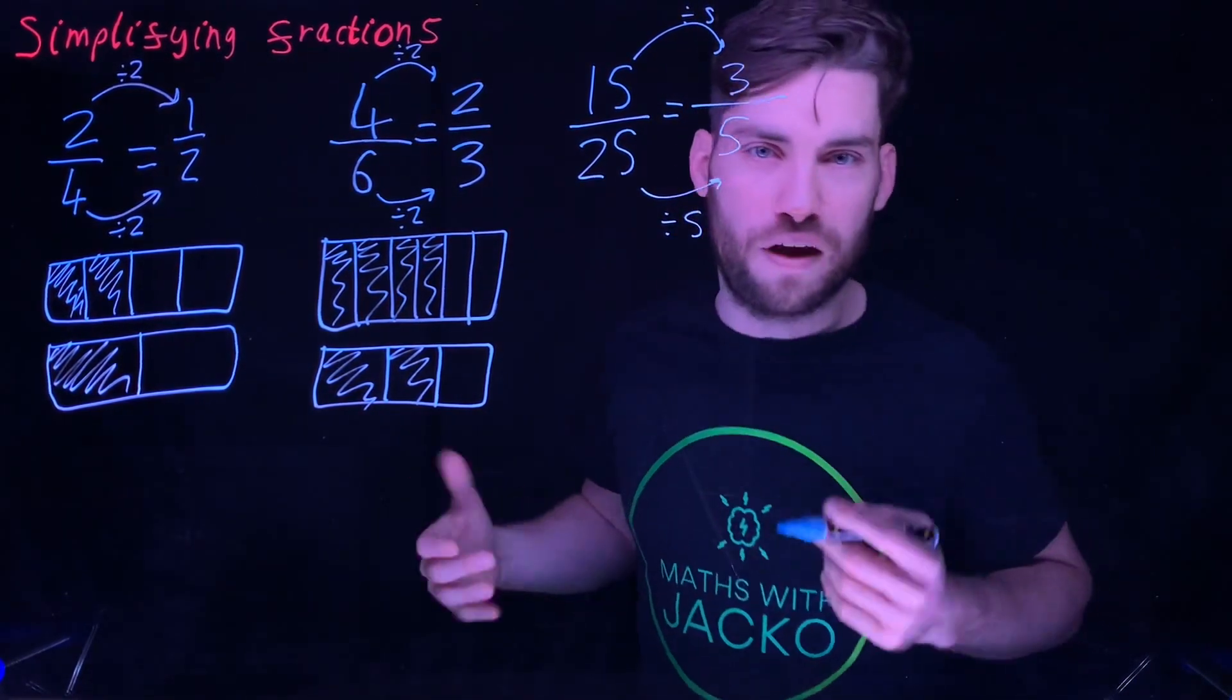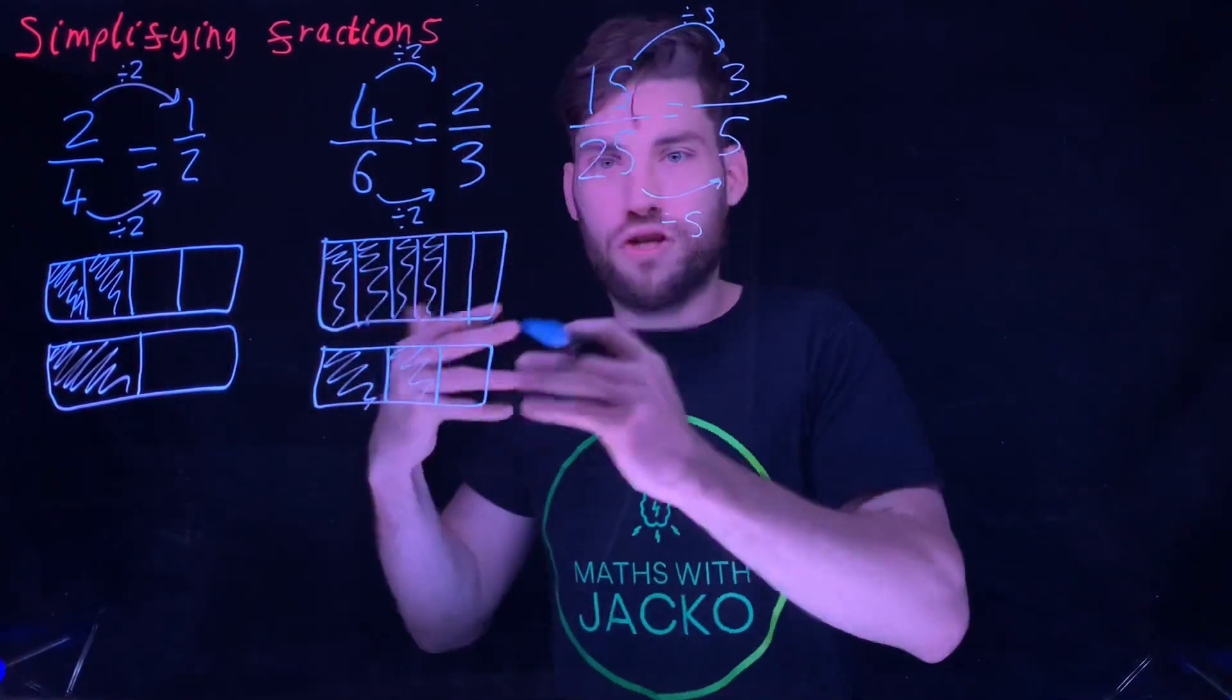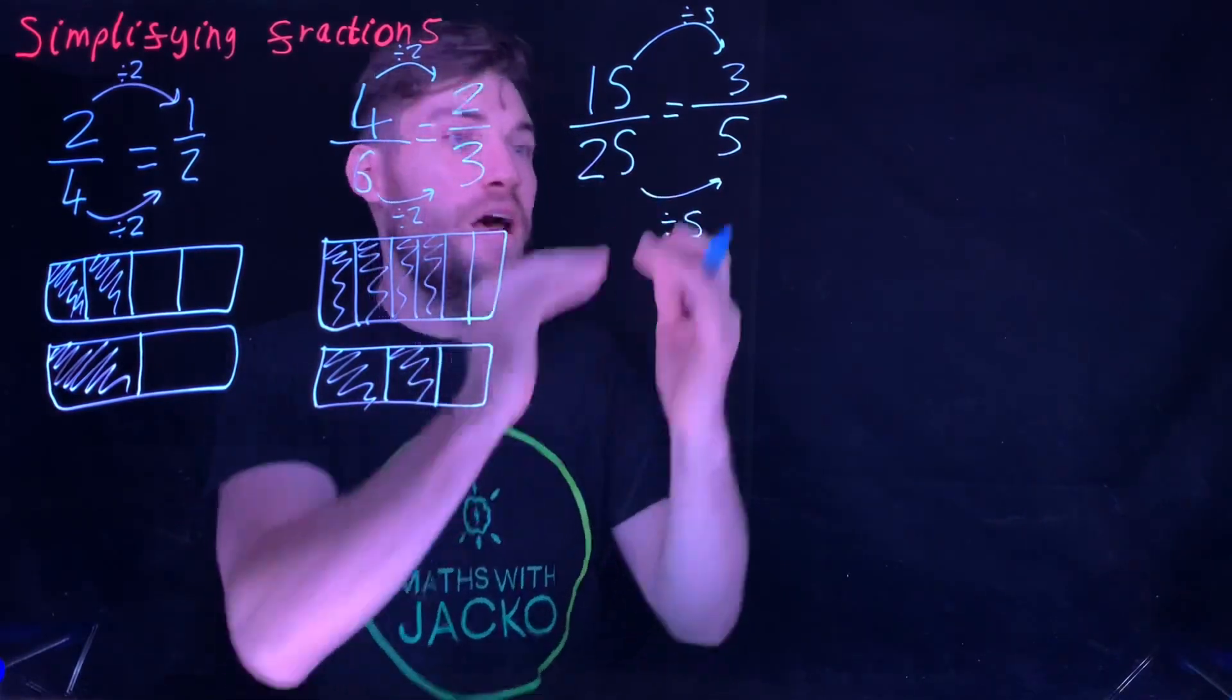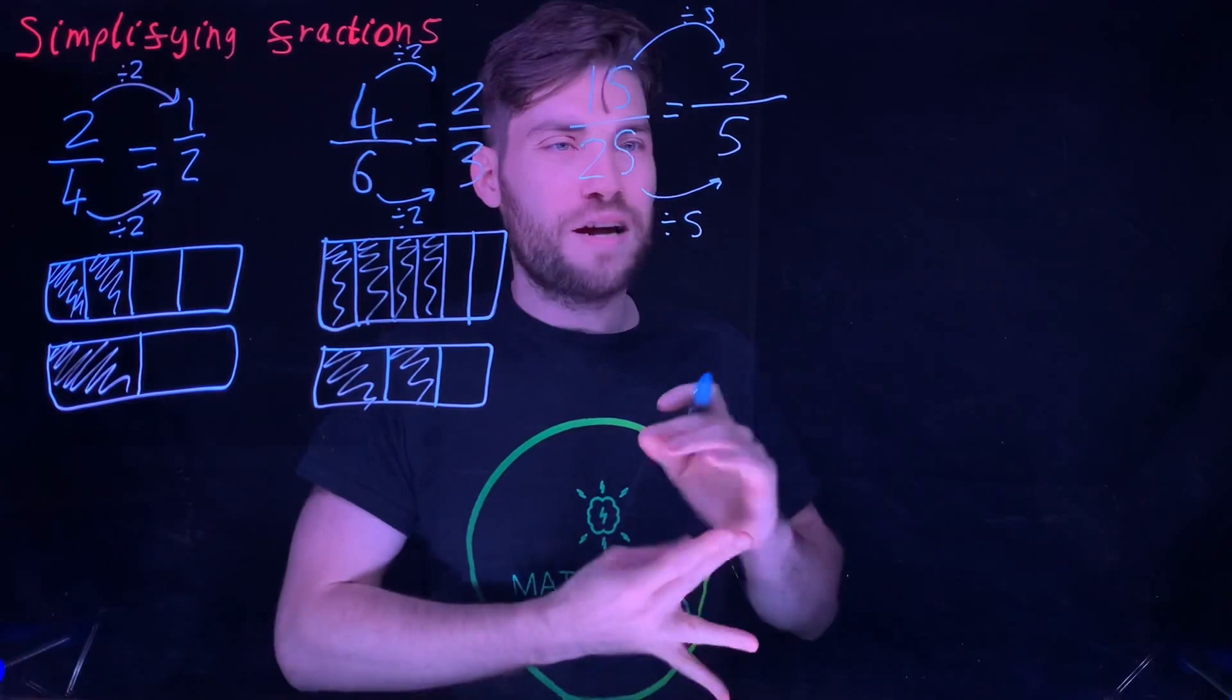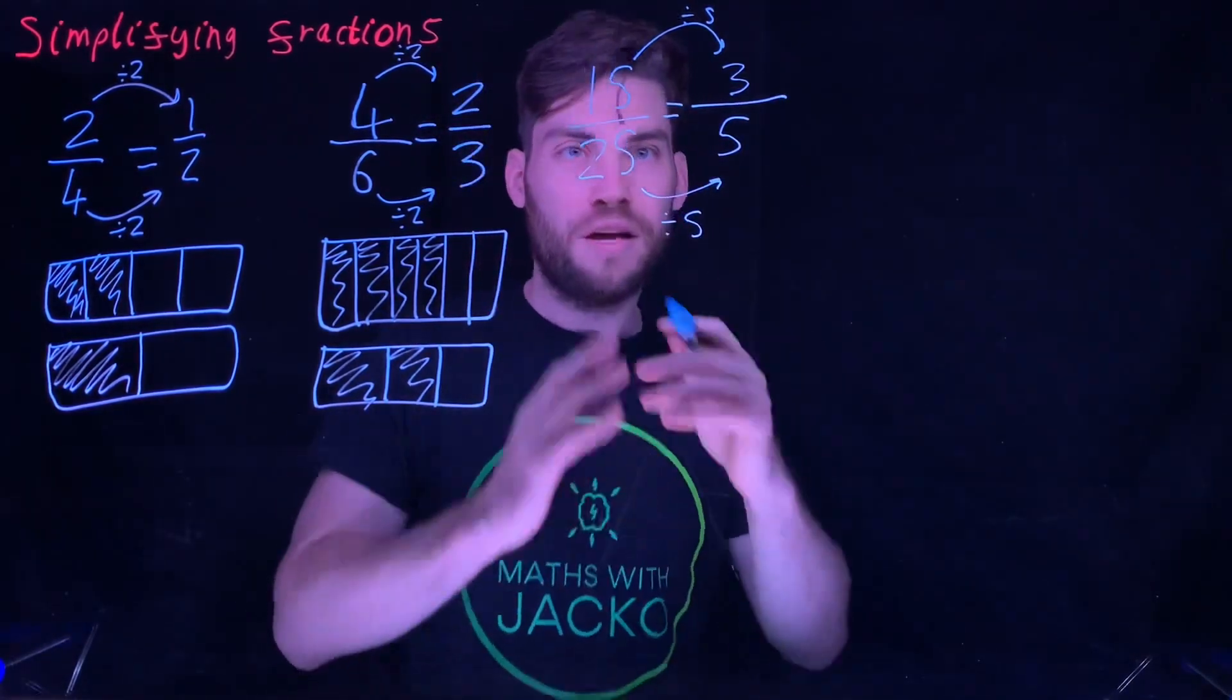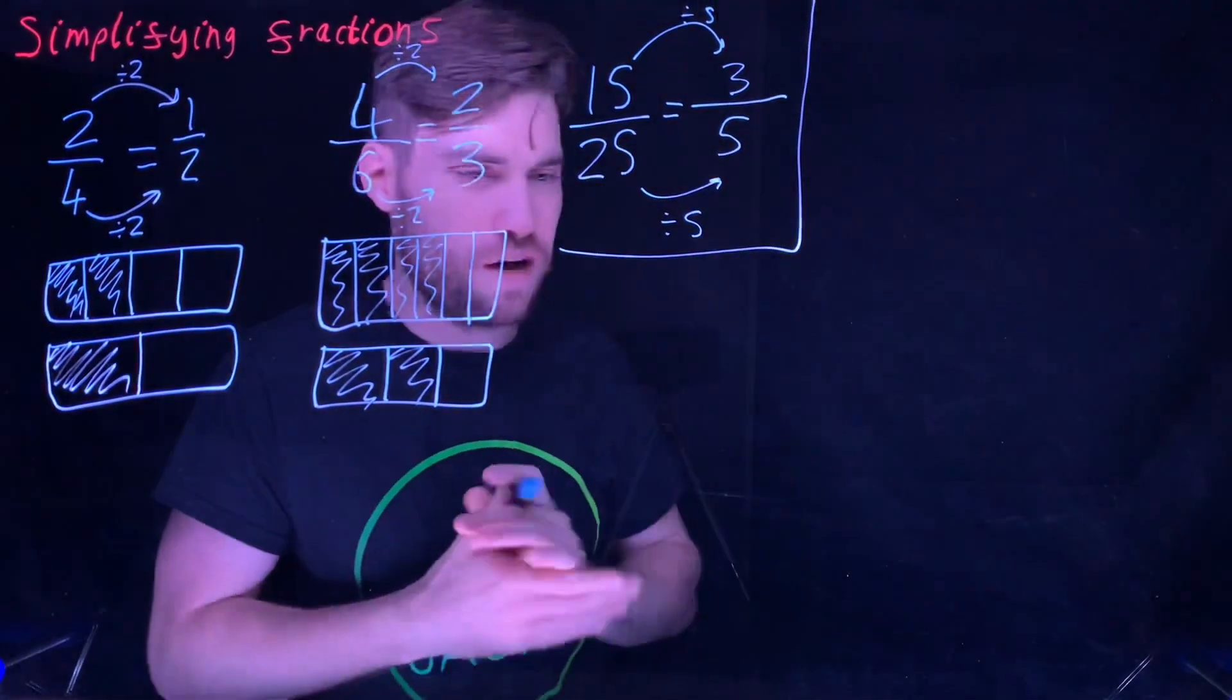I'm not going to draw about 25 boxes, but hopefully this will give you that understanding. So 15 twenty-fifths is the same as three fifths. Hopefully now we're starting to see that this fraction is the same size as this one. It's not smaller because the numbers are smaller.